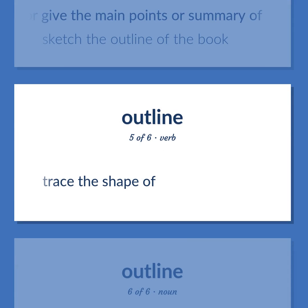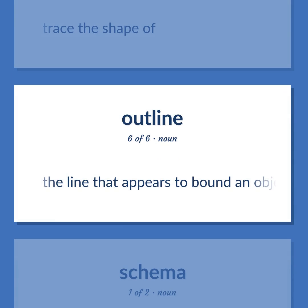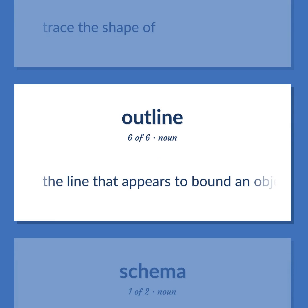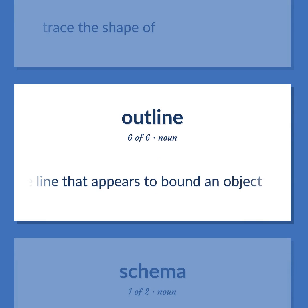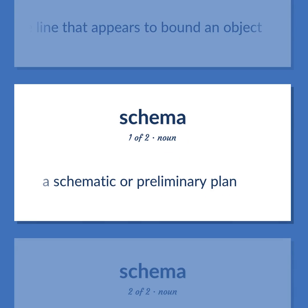Outline: Trace the shape of. The line that appears to bound an object. A schematic or preliminary plan.